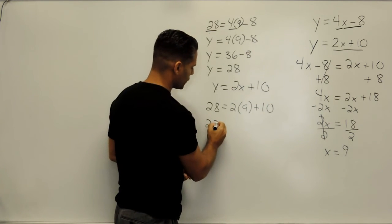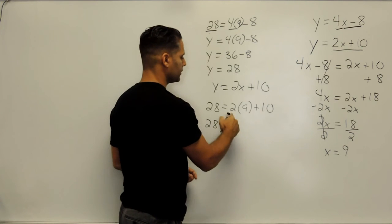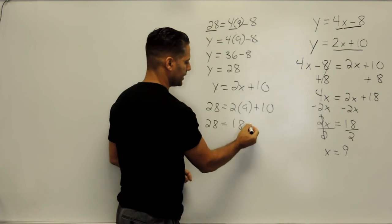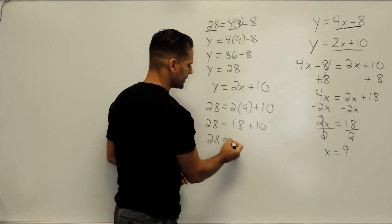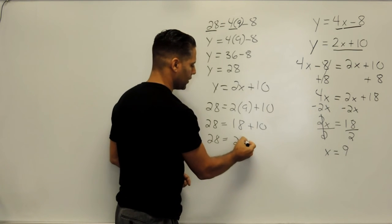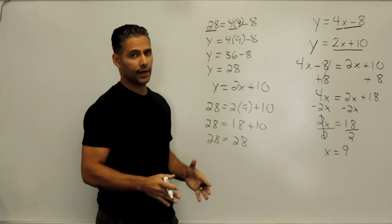So we have 28 equals 2 times 9, which is 18, and 18 plus 10 is equal to 28. So we have successfully verified our results.